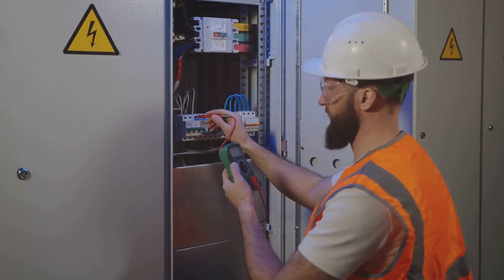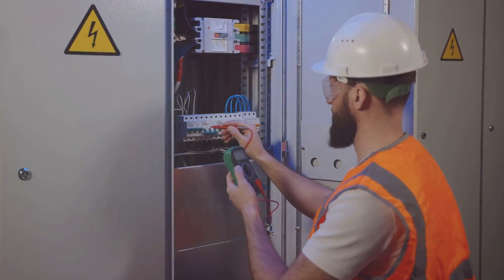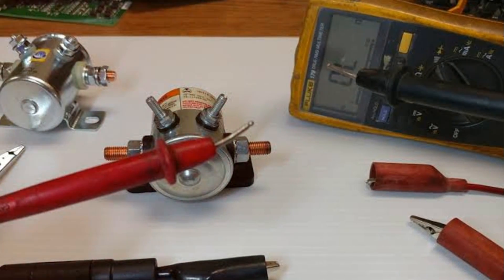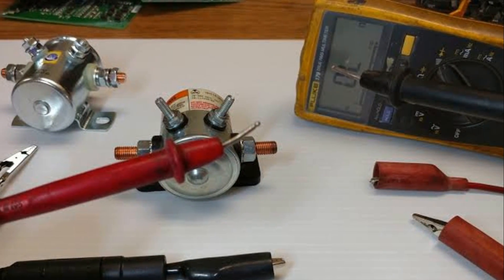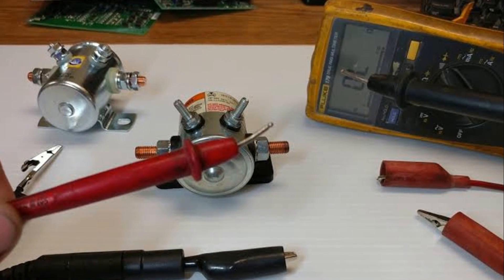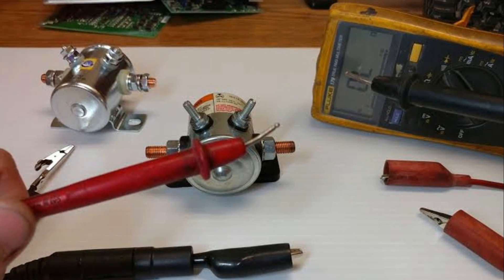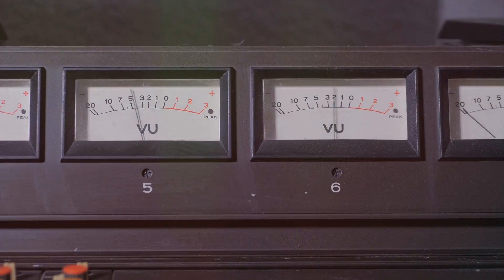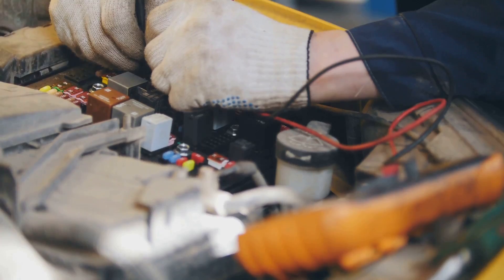To sum it up, checking a solenoid coil with a multimeter involves these simple steps: 1. Set the multimeter to measure resistance. 2. Disconnect the solenoid coil from its power source. 3. Place the multimeter probes on the solenoid coil's terminals. 4. Check the reading. If it falls within the expected range, the coil is functioning properly. If not, it's time to replace the coil.